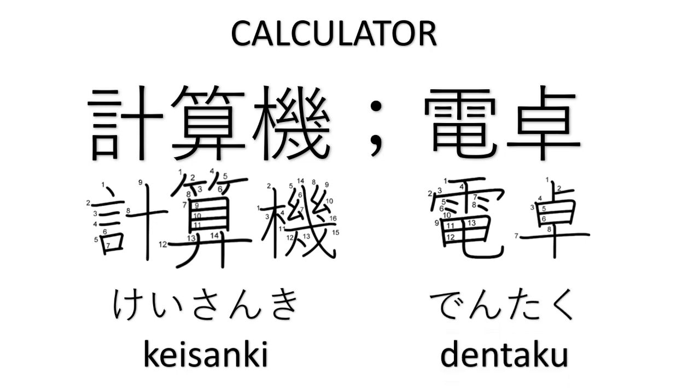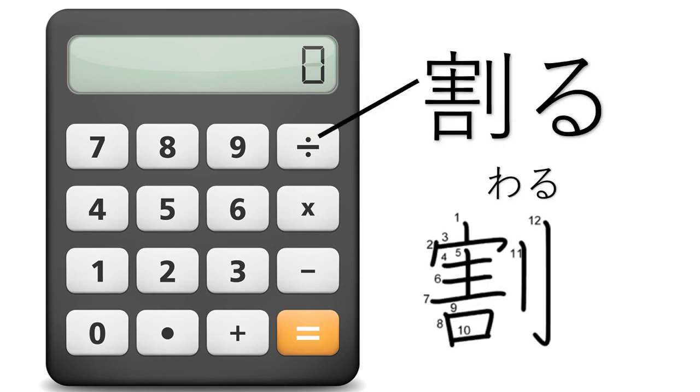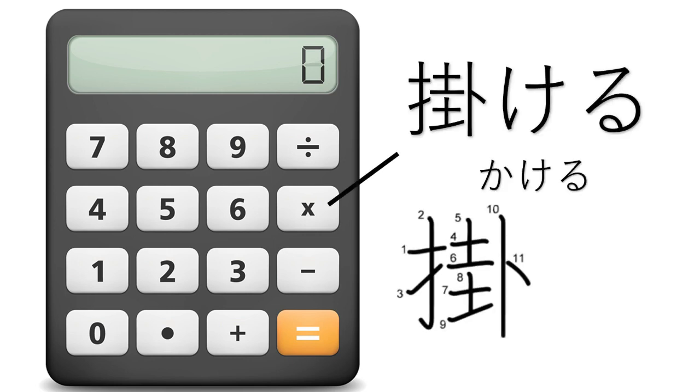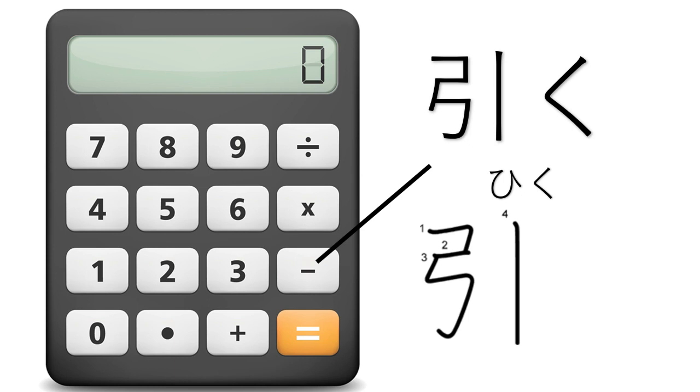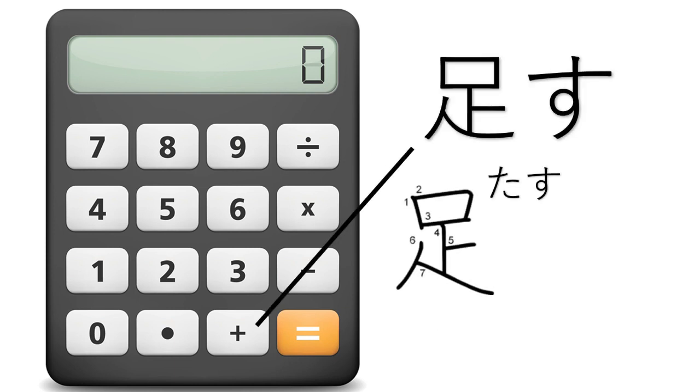Now to say calculator, we have these two words. First one is keisanki, and the other is dentaku. They both mean calculator. To divide is waru. To multiply is kakeru. To subtract is hiku. And to add we have tasu. Equals is pronounced as equal.